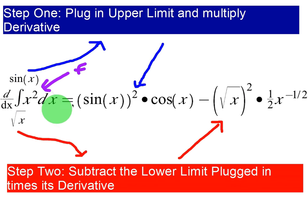Wherever there is an x, I'm replacing it with sin(x) for my first step, and then I'm multiplying by the derivative of what I plugged in. So I plug in sin(x), but then I have to multiply by its derivative, which is cos(x). That's all step one is: plug in the upper limit, multiply by its derivative.